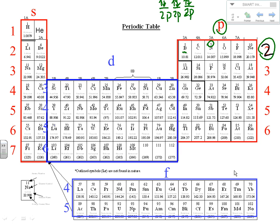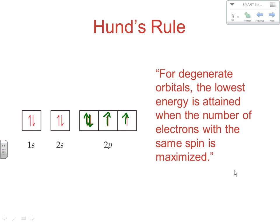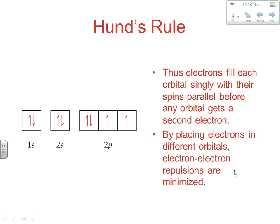For degenerate orbitals, the lowest energy is attained when the number of electrons with the same spin is maximized. If you put a second electron in an orbital, it's going to be higher in energy because of electron repulsions. So you put one in each before any get two. That minimizes electron repulsion, lowers potential energy, and gives more stability. Electrons fill each orbital singly with spins parallel before any orbital gets a second electron.